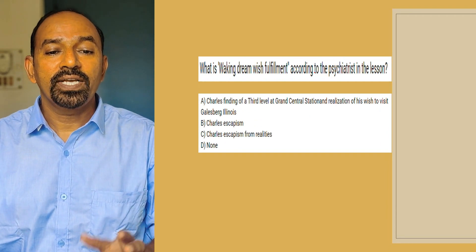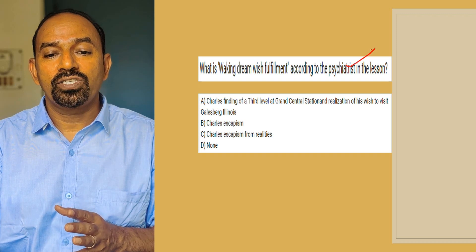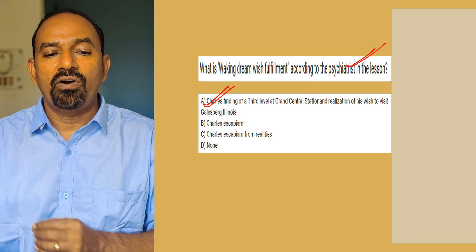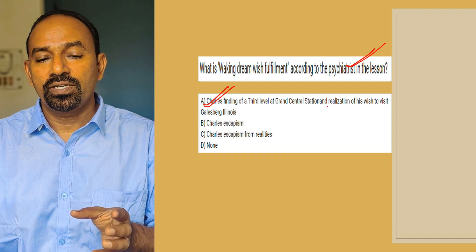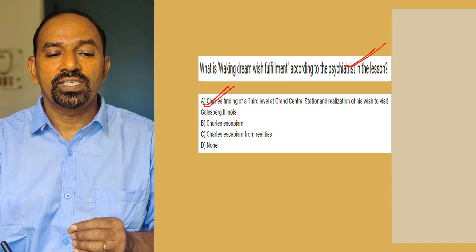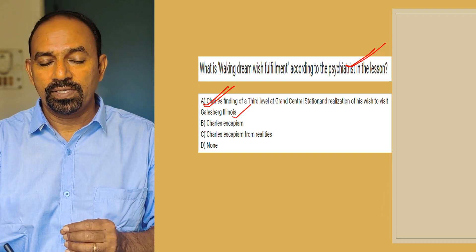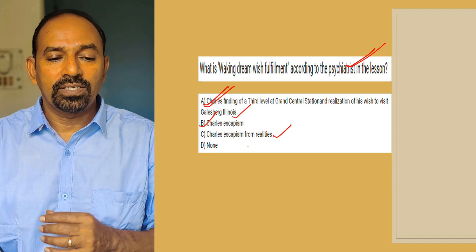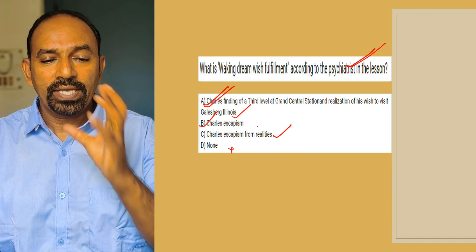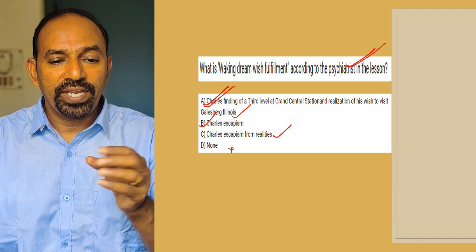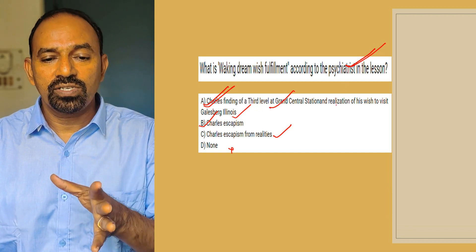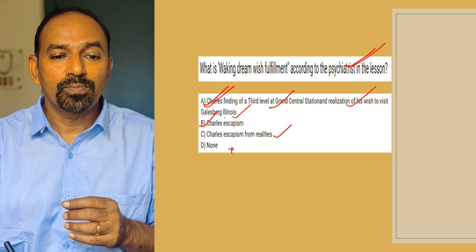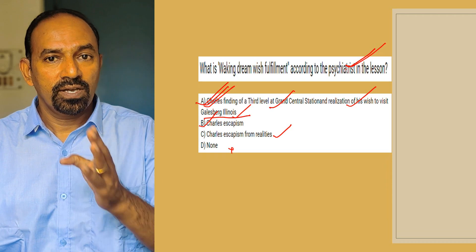Next question: What is waking dream wish fulfillment according to the psychiatrist? Options: Charles' finding of a third level at Grand Central Station and realization of his wish to visit Galesburg, Illinois; Charles' escapism; Charles' escapism from realities; none. The right option is A — Charles' finding of a third level at Grand Central Station and realization of his wish to visit Galesburg, Illinois.